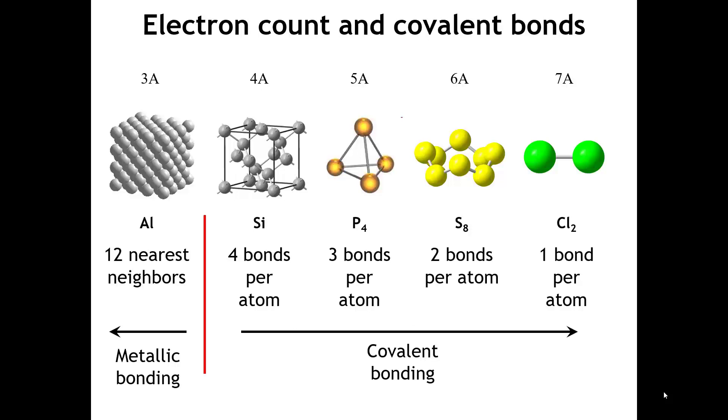For the halogens, like chlorine, there are seven valence electrons, one short of an octet. And so, each halogen atom has to make one covalent bond to complete its octet.